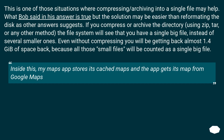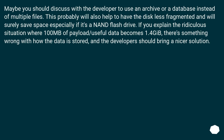This is one of those situations where compressing or archiving into a single file may help. If you compress or archive the directory using zip, tar, or any other method, the file system will see that you have a single big file instead of several smaller ones. Even without compressing, you will be getting back almost 1.4 GB of space, because all those small files will be counted as a single big file. Maybe you should discuss with a developer to use an archive or a database instead of multiple files. If you explain the situation where 100 MB of useful data becomes 1.4 GB, there's something wrong with how the data is stored, and the developer should bring a nicer solution.